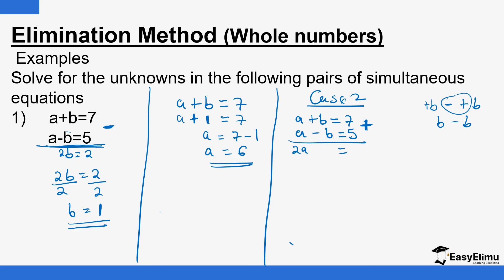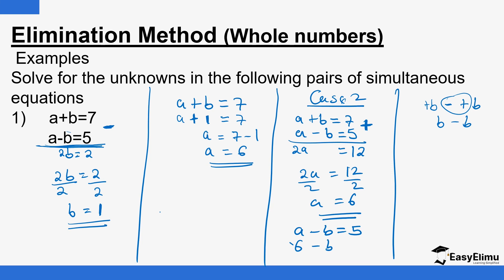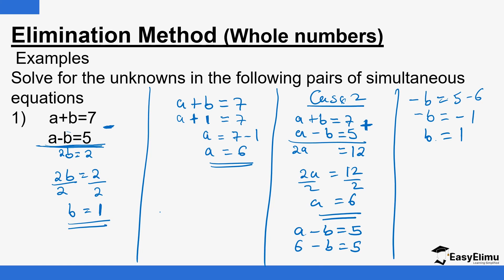Adding the two equations gives 2a equals 12 on the right side. Dividing both sides by 2, a equals 6. Then do back substitution: using a minus b equals 5, substituting a equals 6 gives 6 minus b equals 5. So minus b equals 5 minus 6, which is negative 1. Multiplying both sides by negative 1 gives b equals 1. You get the same values — so you don't have to eliminate a or b specifically; either one can be eliminated and it will still work.